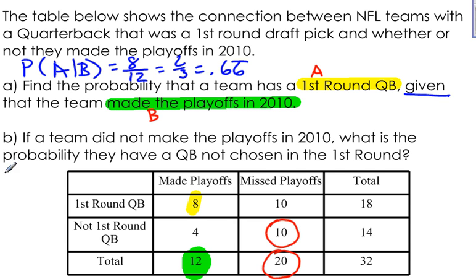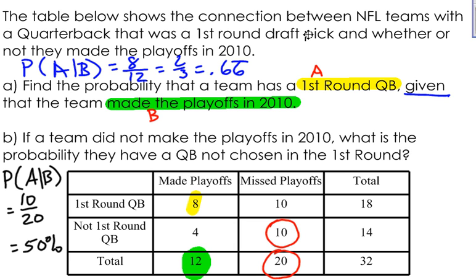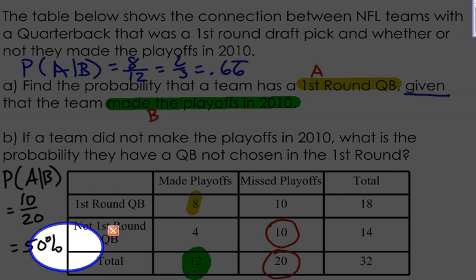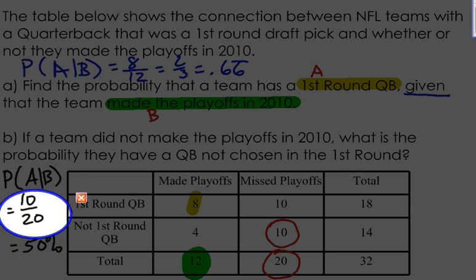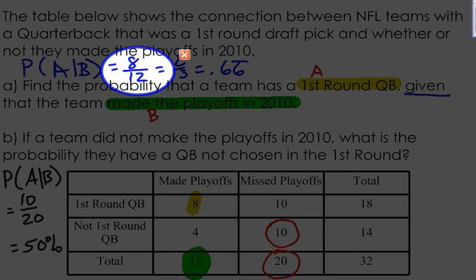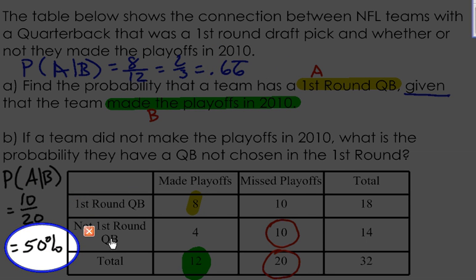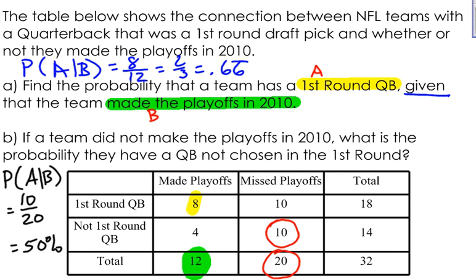For part B, the probability of A given B equals 10 out of 20, or 50%. You can write your probability as a decimal, as a percent, or as a fraction. A lot of times it depends on the problem, and that will determine which answer is the better one to give. So there's an example of conditional probability.